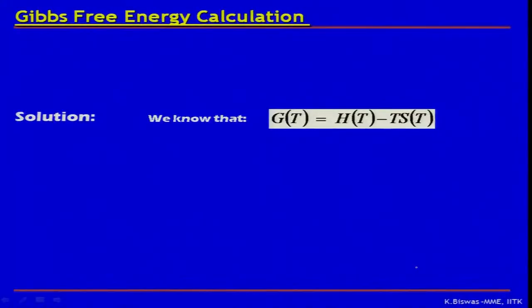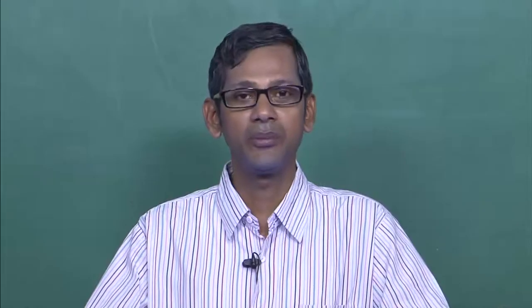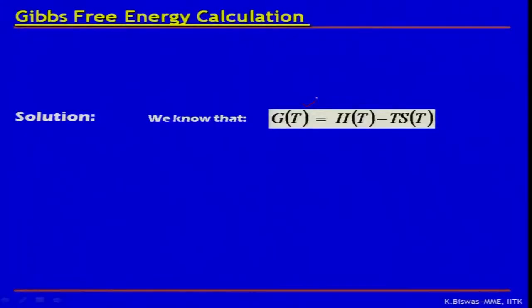The way Gibbs free energy is defined is given on the screen. Gibbs free energy is always marked with the letter capital G. It is a function of both temperature and pressure. In metallurgical systems, we always assume pressure to be at one atmospheric pressure. So G as a function of temperature is equal to H as a function of temperature minus T multiplied by S as a function of temperature.